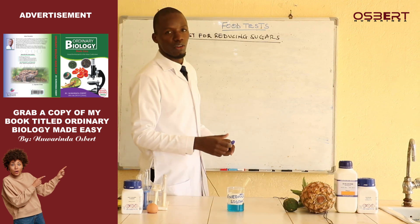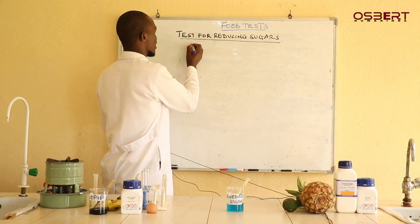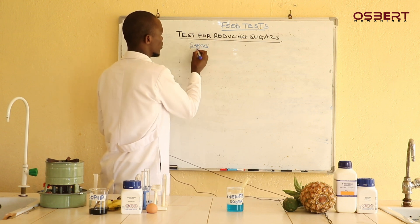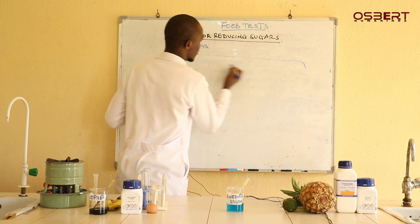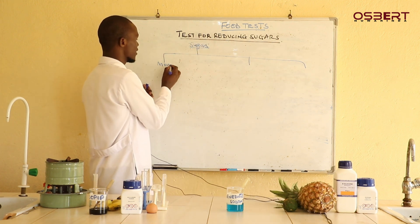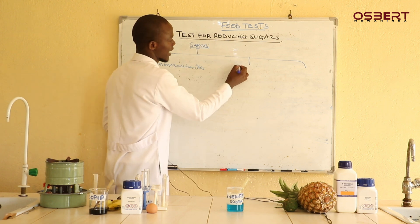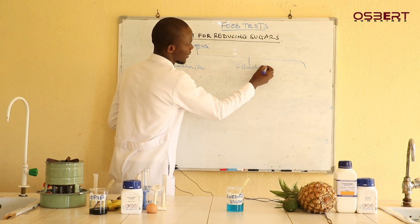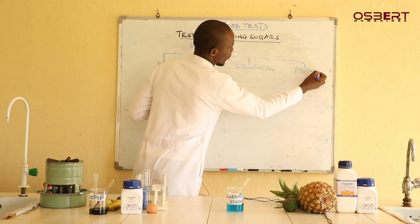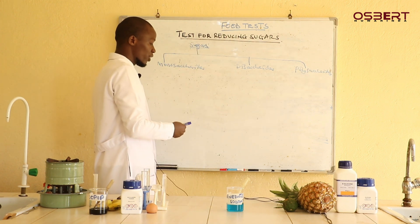In the previous episode, or in the first episode about the fruit test, we saw that as far as sugars or carbohydrates are concerned, these carbohydrates are categorized into three types. These three types are: monosaccharides, disaccharides, and polysaccharides. We saw that these types of sugars depend on their sizes.